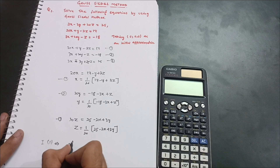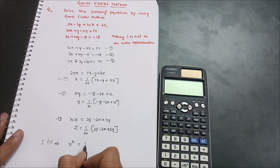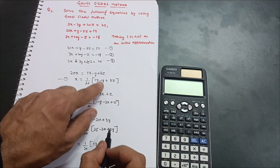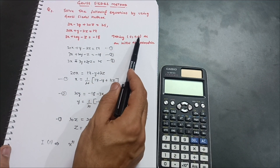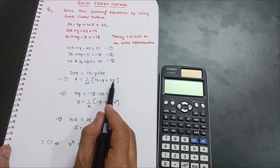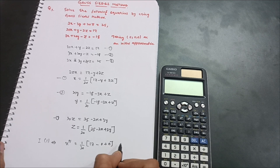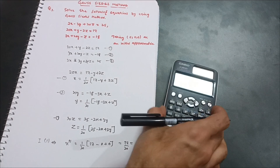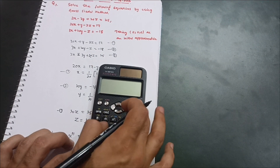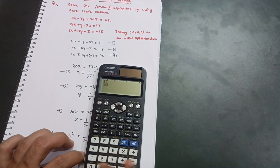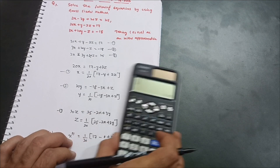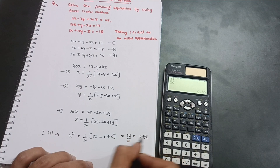Iteration 1 — for x1: using equation 1, x1 = (1/20)(17 − y + 2z). With initial conditions y = 0 and z = 0: x1 = (1/20)(17 − 0 + 2×0) = 17/20 = 0.85. So x1 = 0.85.